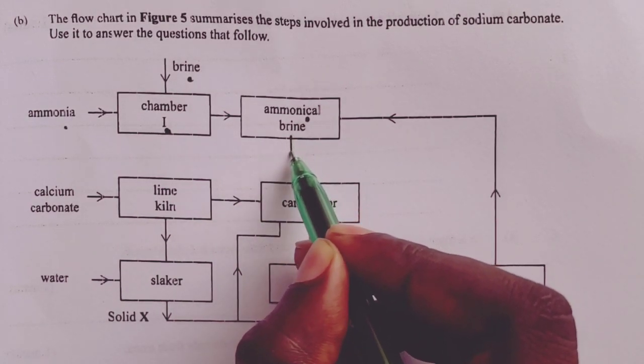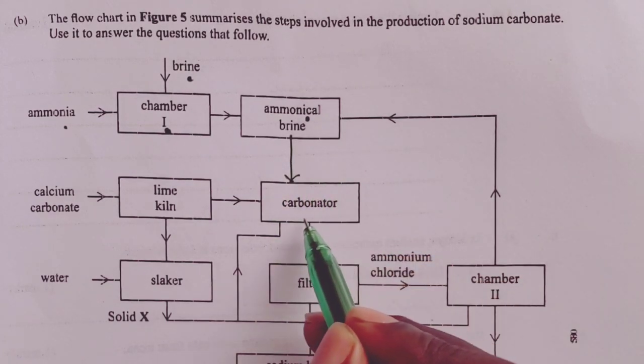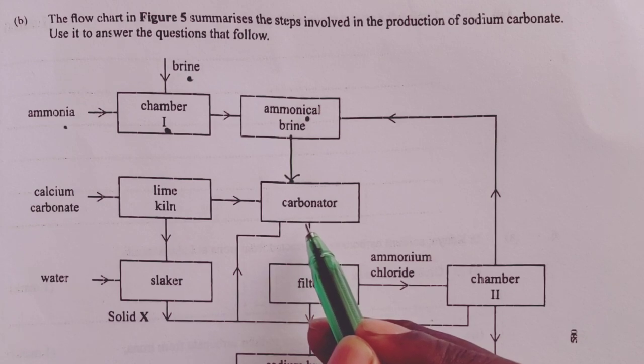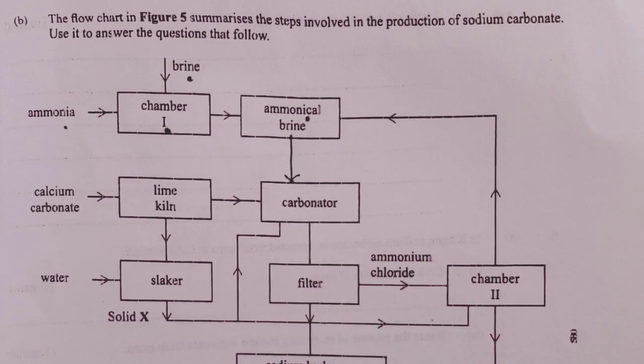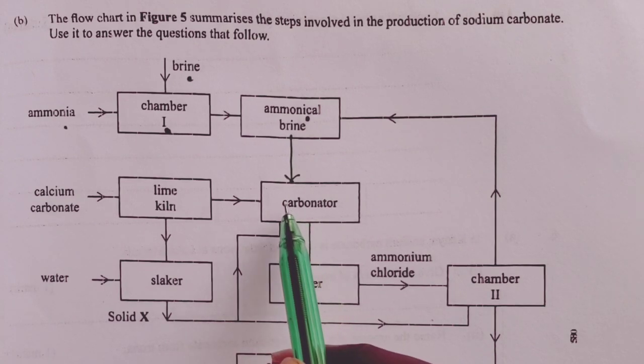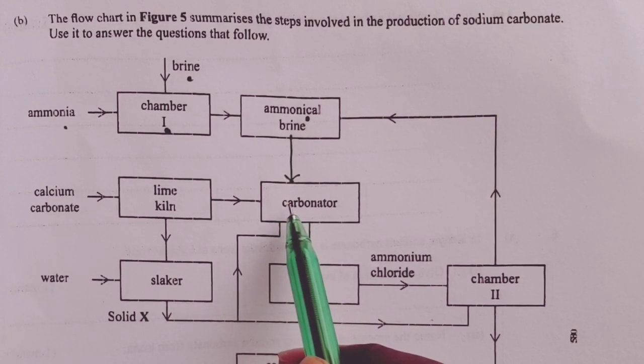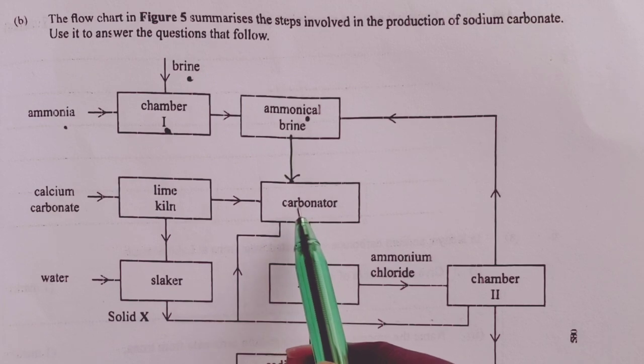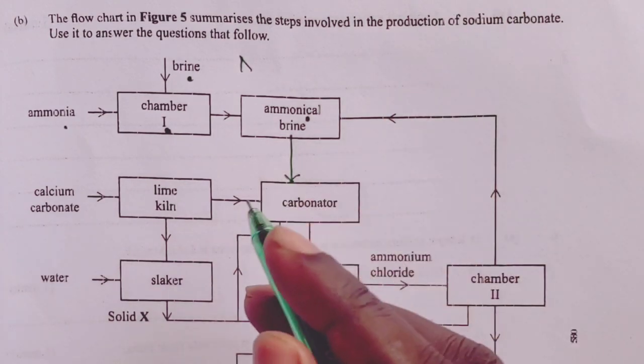Once we form our ammoniated brine, we lead it to the carbonator or the Solvay tower. In the Solvay tower, this, as we always say, is the engine of the process. So in here, two reactions take place, and we can go ahead and combine these two reactions to give us an overall reaction.